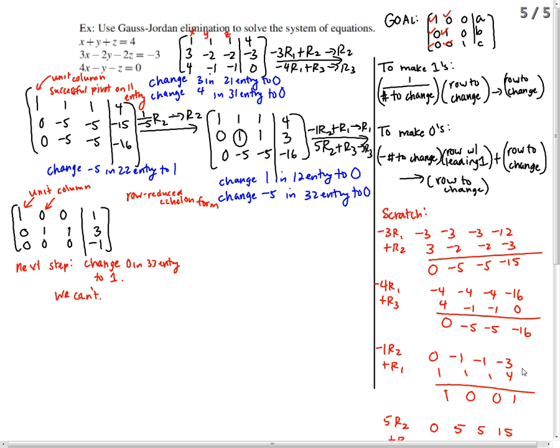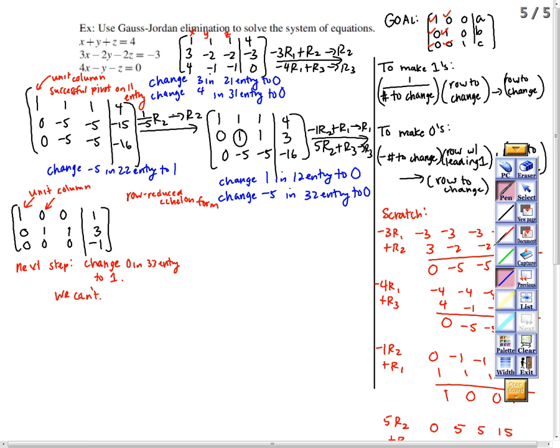So, I can read off my answers. Remember, this was the x column, the y column, and the z column. So, my answers are x equals 1, y plus z equals 3, and 0 equals negative 1. Looks pretty good until you look a little more closely at the third equation. 0 equals negative 1. That's nonsense. So, we see that there's no way that can be true. We have no solution.